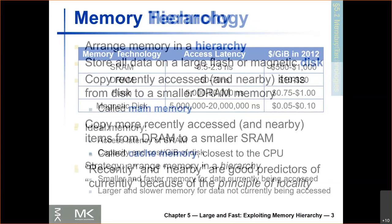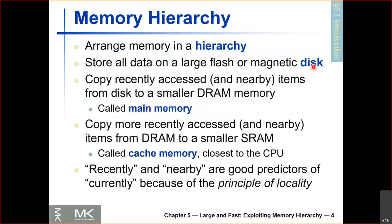In the memory hierarchy, we stored all our data in flash or a magnetic disk. Recent access data we put in memory made of DRAM, and the more recently accessed data we put in a cache made of SRAM. The idea is that recently accessed data or data nearby the recently accessed data is a good predictor of what is currently going to be accessed, because of the principle of locality.